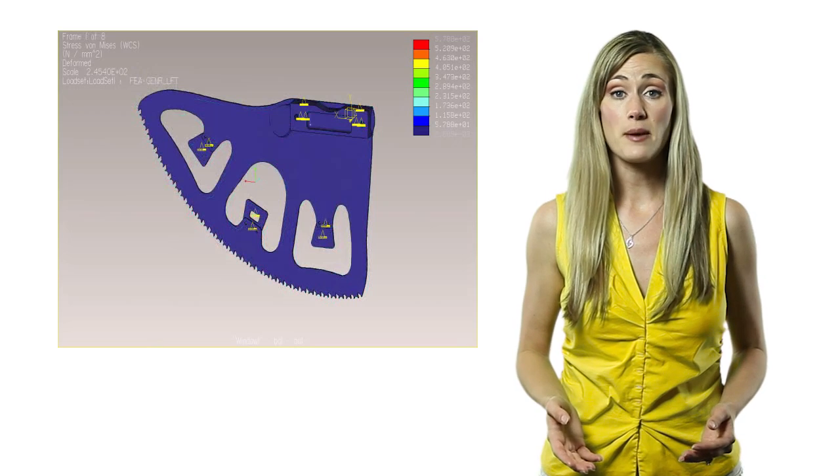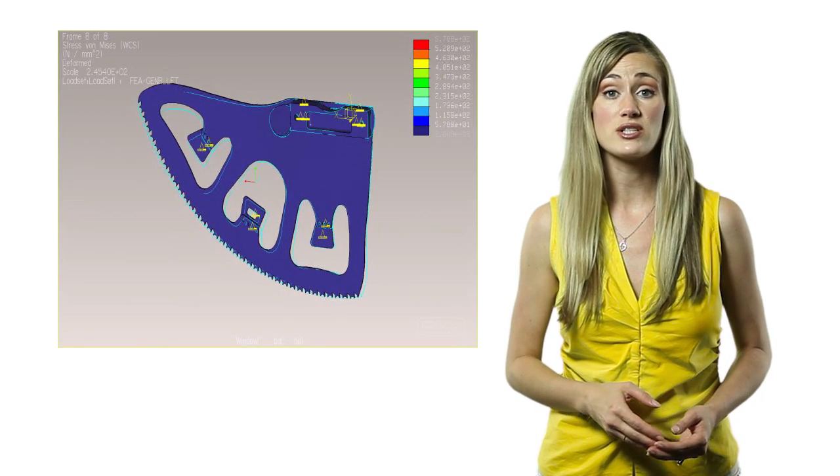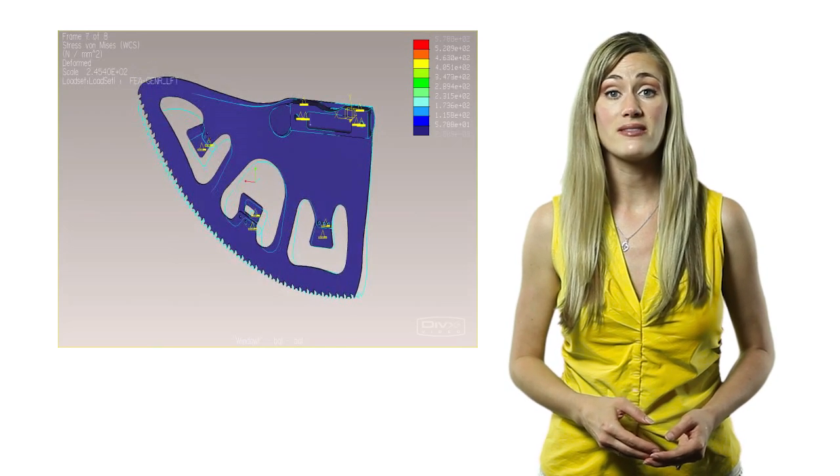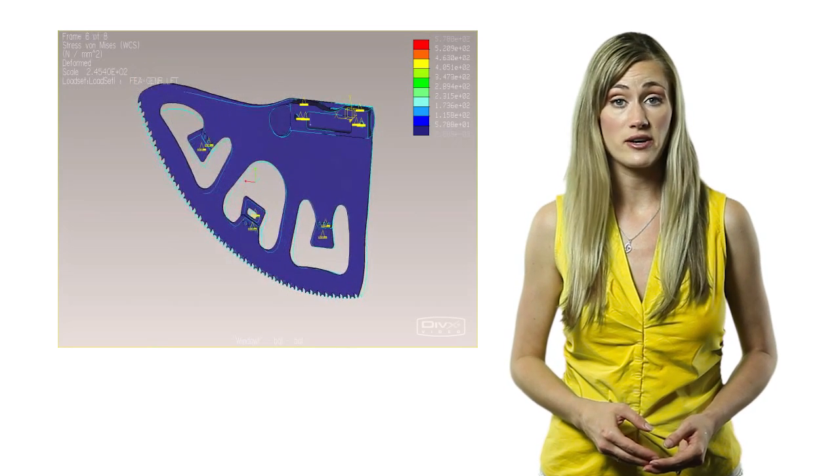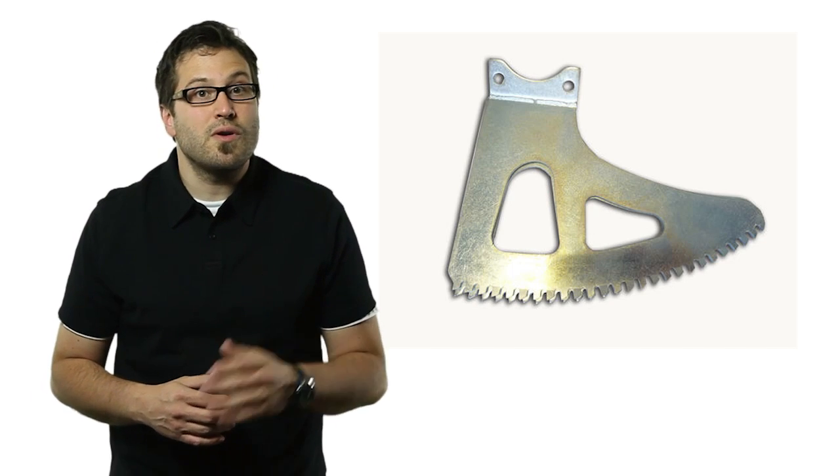The next step in reducing the blade's weight was to carve away sections of material while ensuring that the blade was strong enough not to shatter. To do this testing, Arbor Tech used Creo Parametric to begin cutting away sections of the blade's body. After each section was removed, Creo Simulate was used to run stress analysis to determine whether or not the blade would break under working conditions.